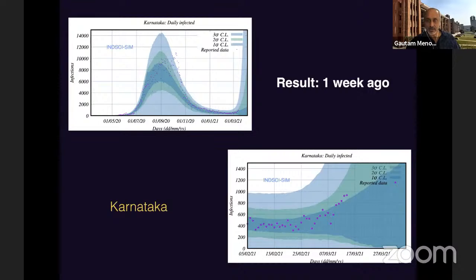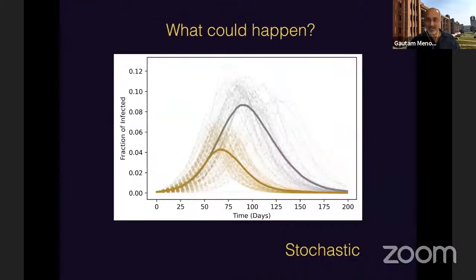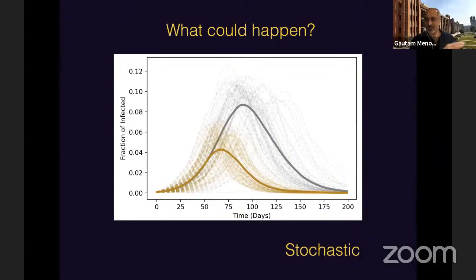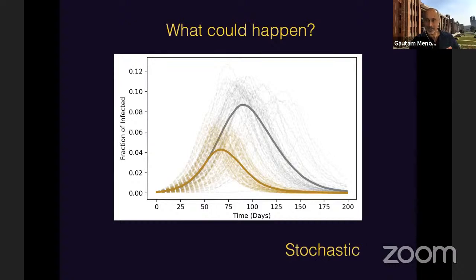If you run models that are a little more complex and run them again and again with slightly different conditions, what you actually get are not nice smooth lines. You see a whole bunch of possible trajectories, and each is a potential trajectory that the disease could have taken. That's where stochasticity enters. What happens to a model is, at some very deep level, unpredictable, because it could change as a function of completely random events not included in that model at all.